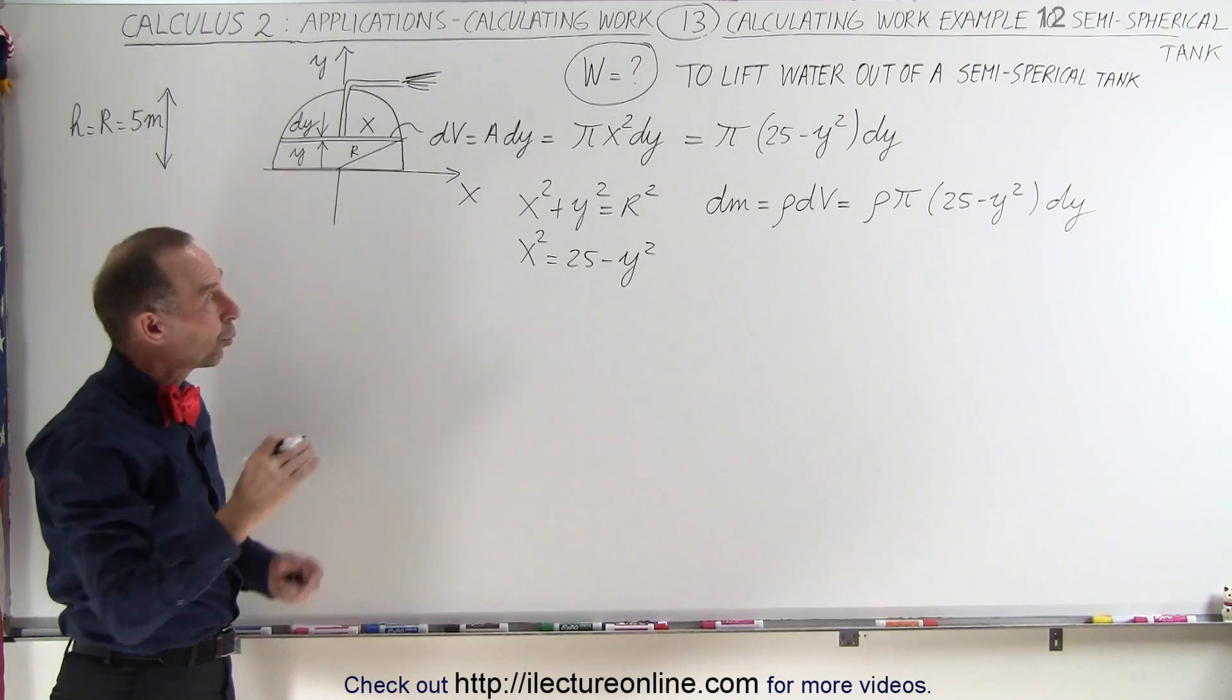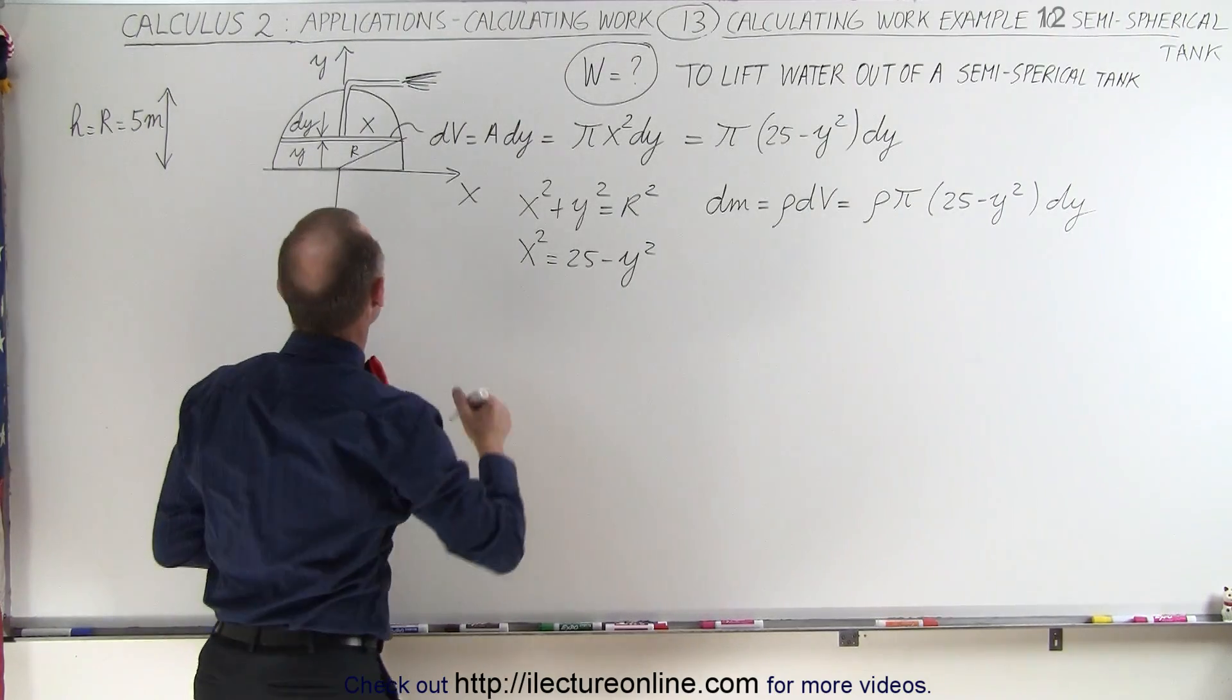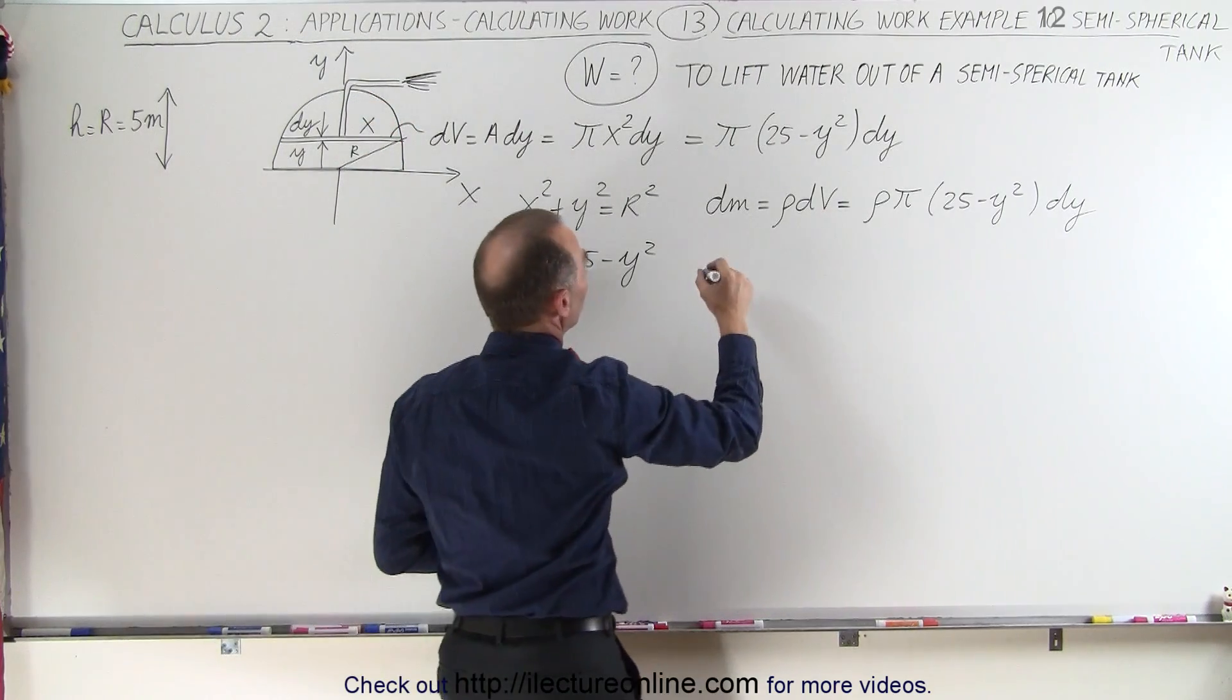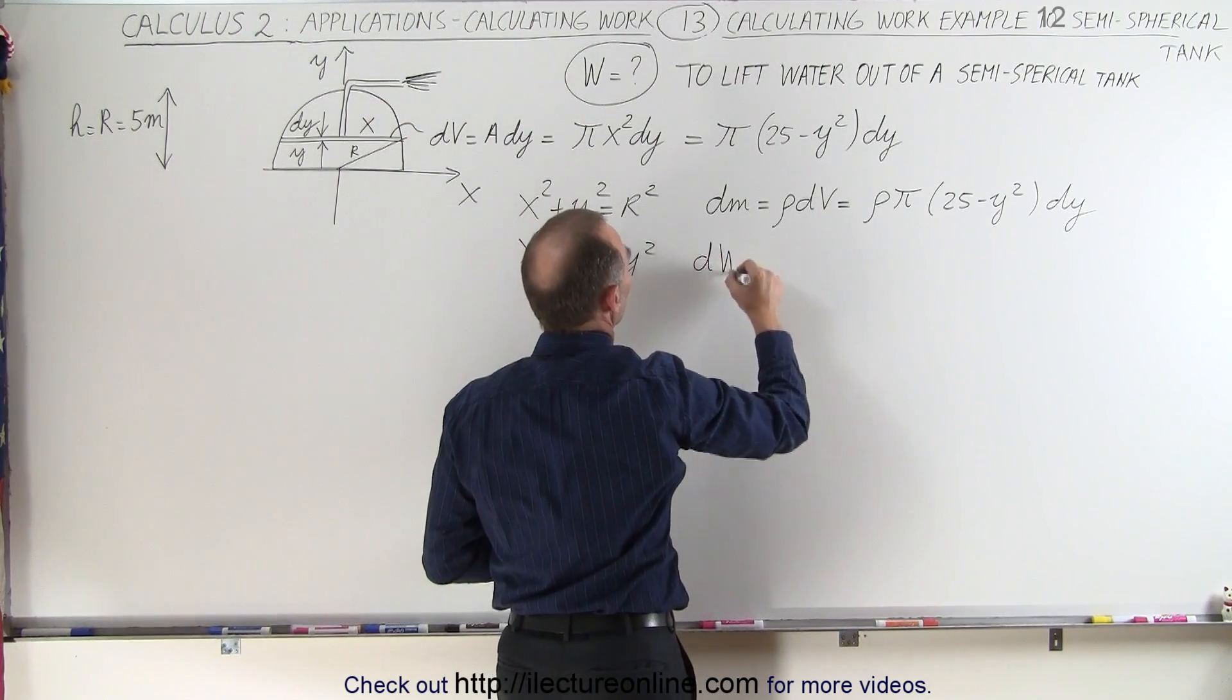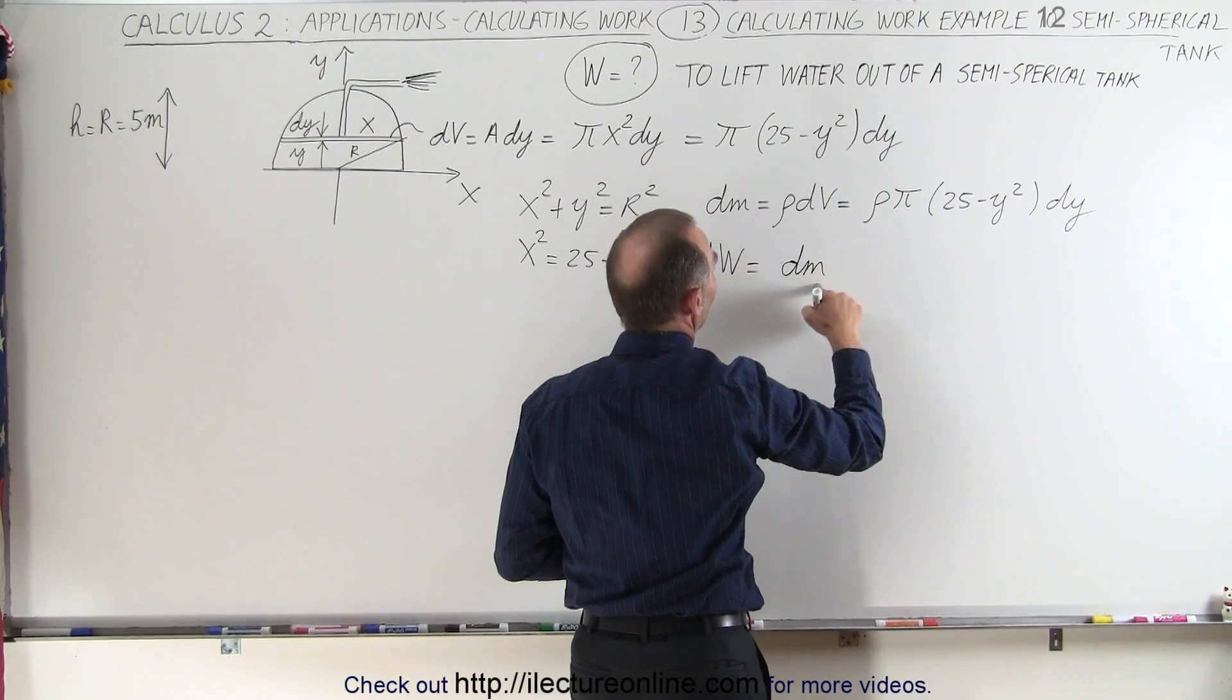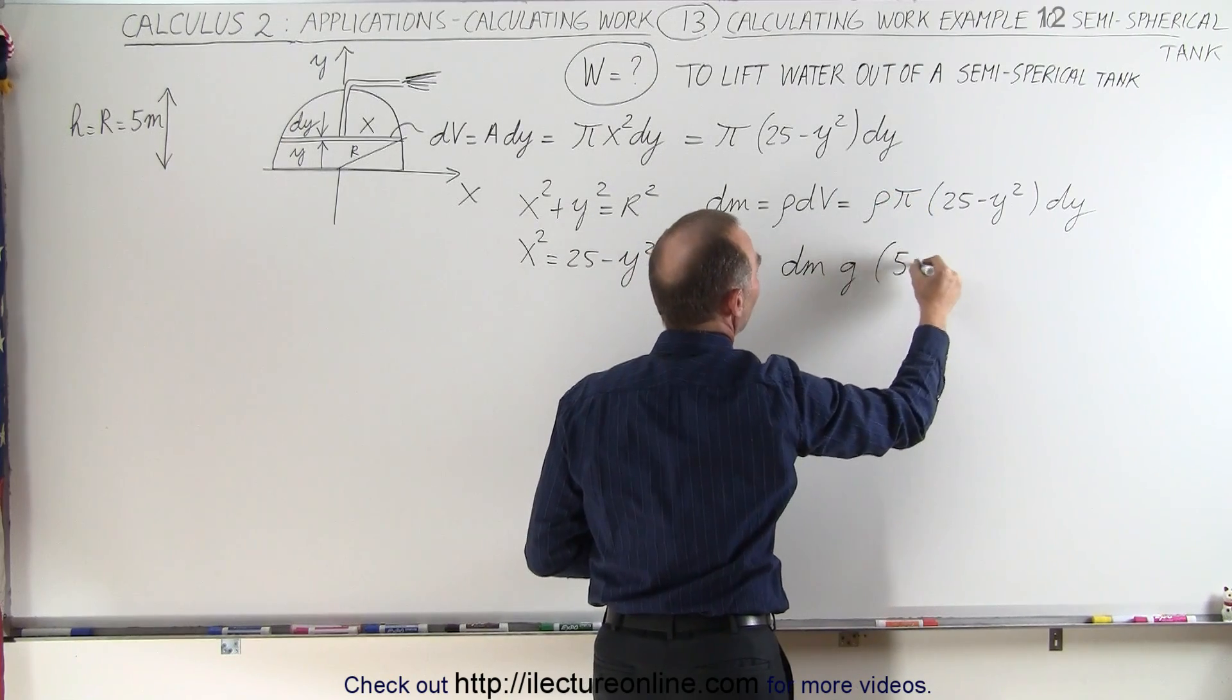And finally, to get the work to lift that small little dm up to the top, notice that the distance here would be 5 - y. So then the work done, dW, would be equal to dm times g times the height that we lifted through, which would be 5 - y.